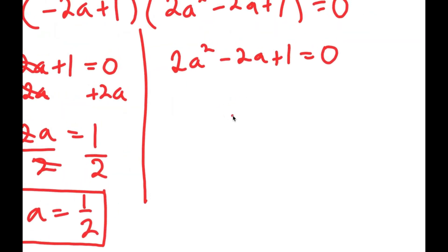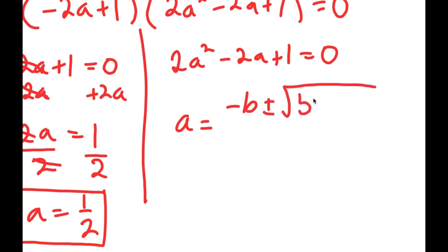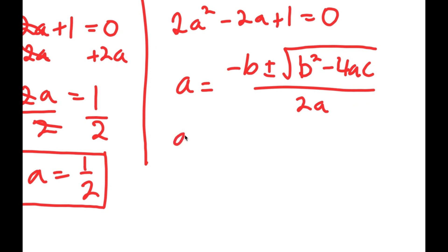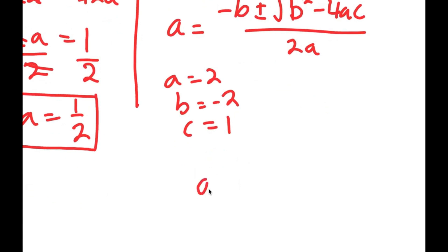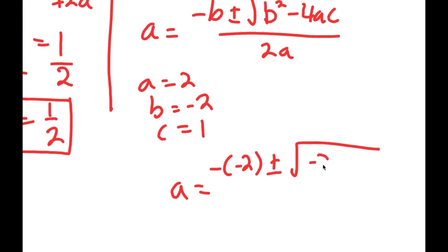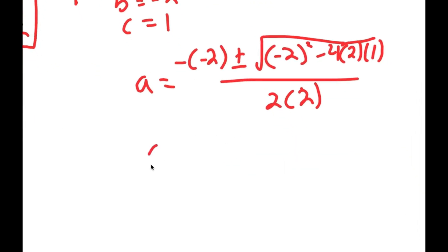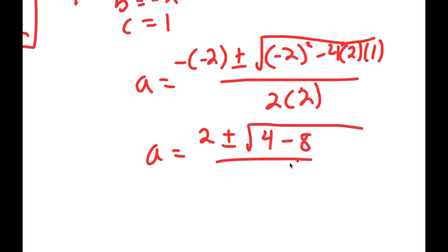For 2a squared minus 2a plus 1 equals 0, I'm going to use the quadratic formula because this is a quadratic equation. The quadratic formula is negative b plus or minus the square root of b squared minus 4ac, all over 2a. Plugging in values: negative of negative 2 plus or minus the square root of negative 2 squared, minus 4 times 2 times 1, all over 2 times 2. This equals positive 2 plus or minus the square root of 4 minus 8 over 4.